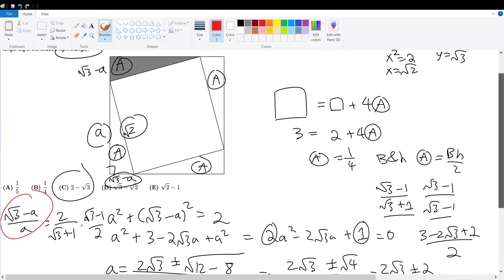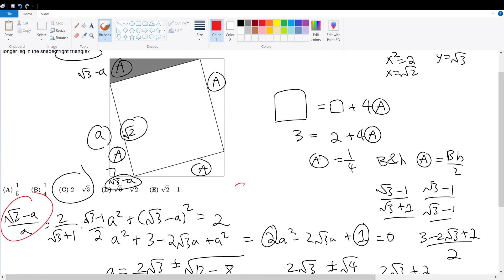So we have two possible answers, but notice that we do not have 2 plus root 3 as an answer choice within the selection. Therefore, C must be our correct answer.